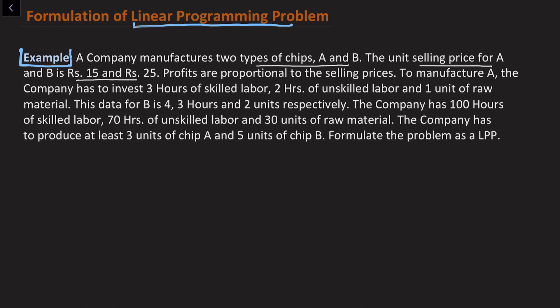It is said that profits are proportional to the selling prices. To manufacture chip A, the company has to invest three hours of skilled labor, two hours of unskilled labor, and one unit of raw material. The data for chip B is also given. The company has 100 hours of skilled labor, 70 hours of unskilled labor, and 30 units of raw material.